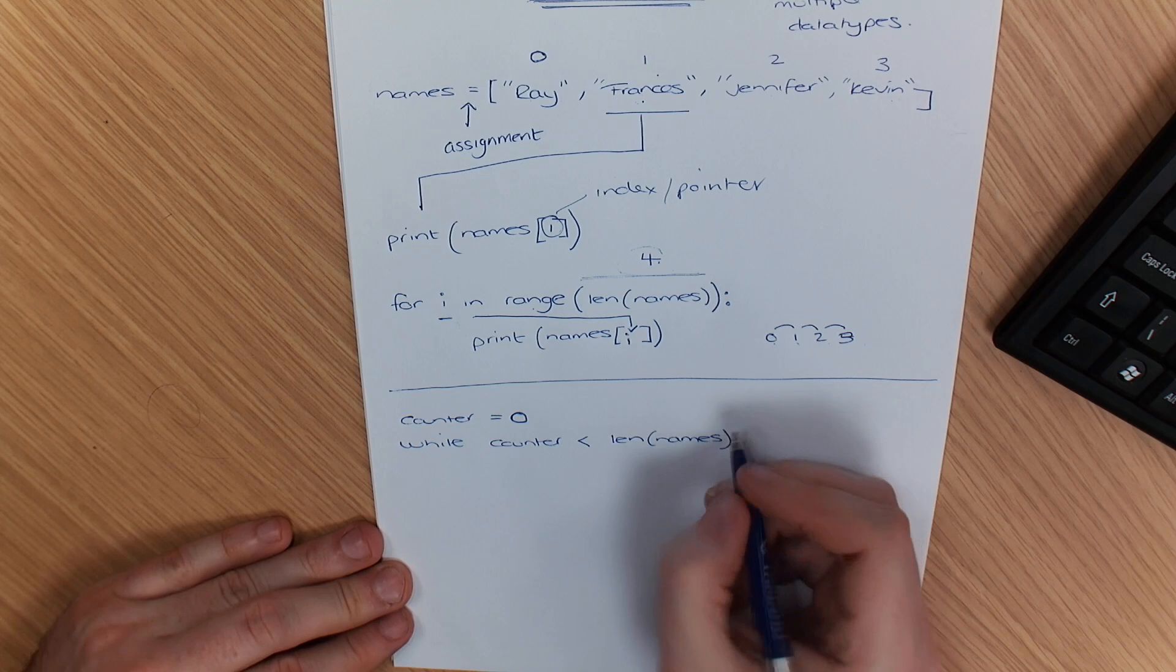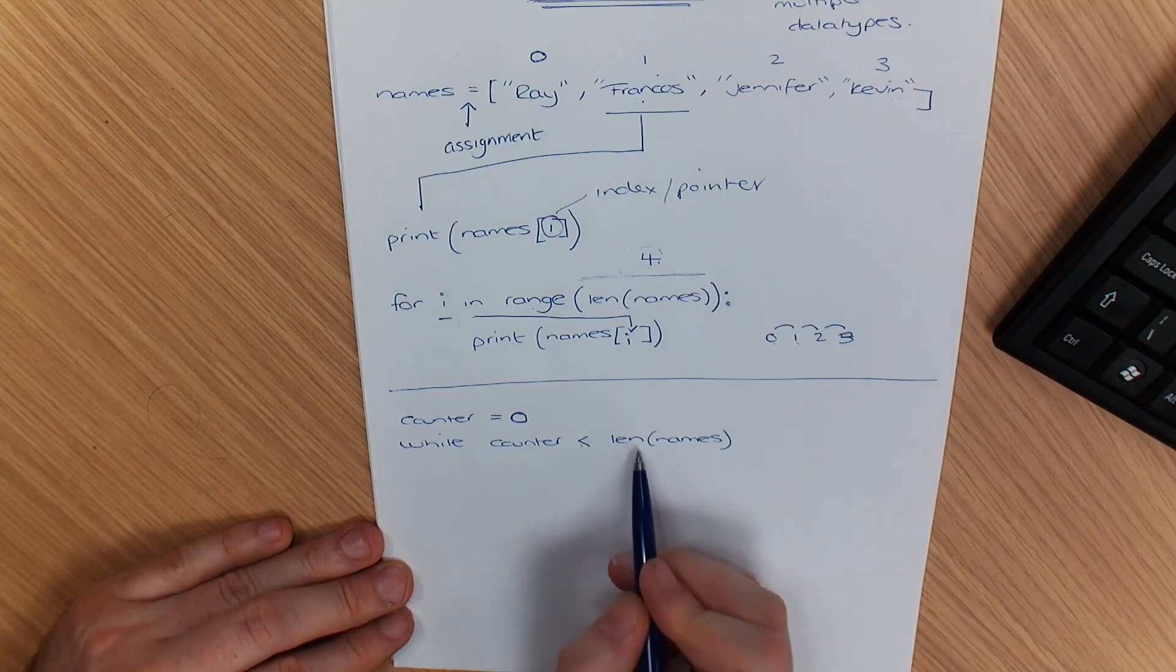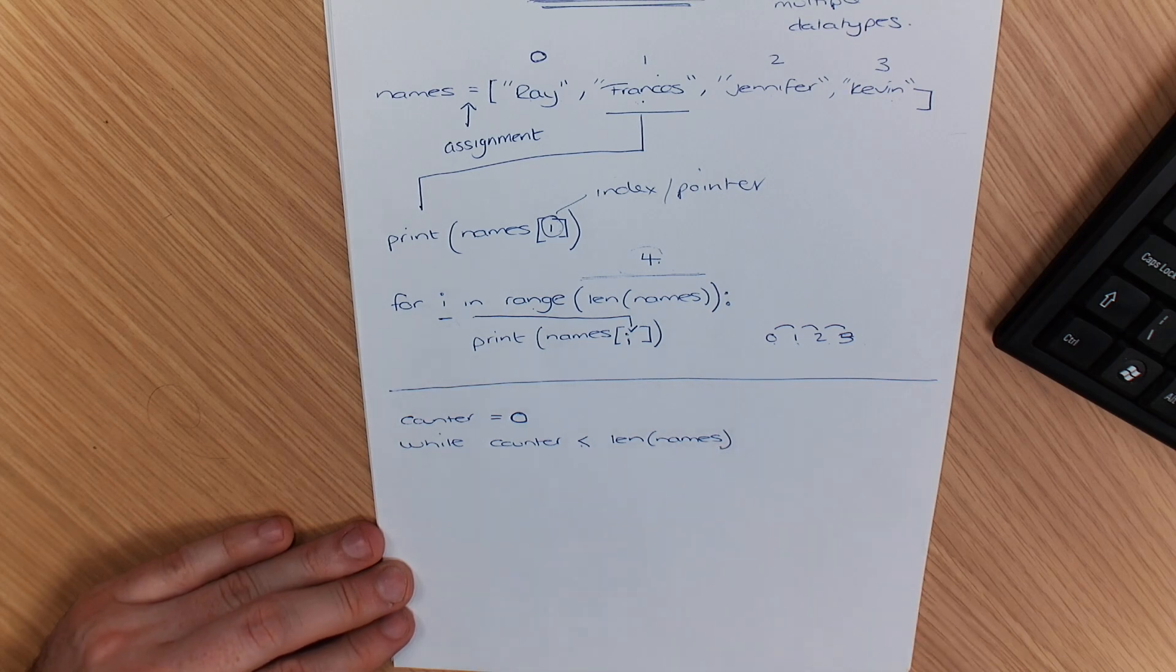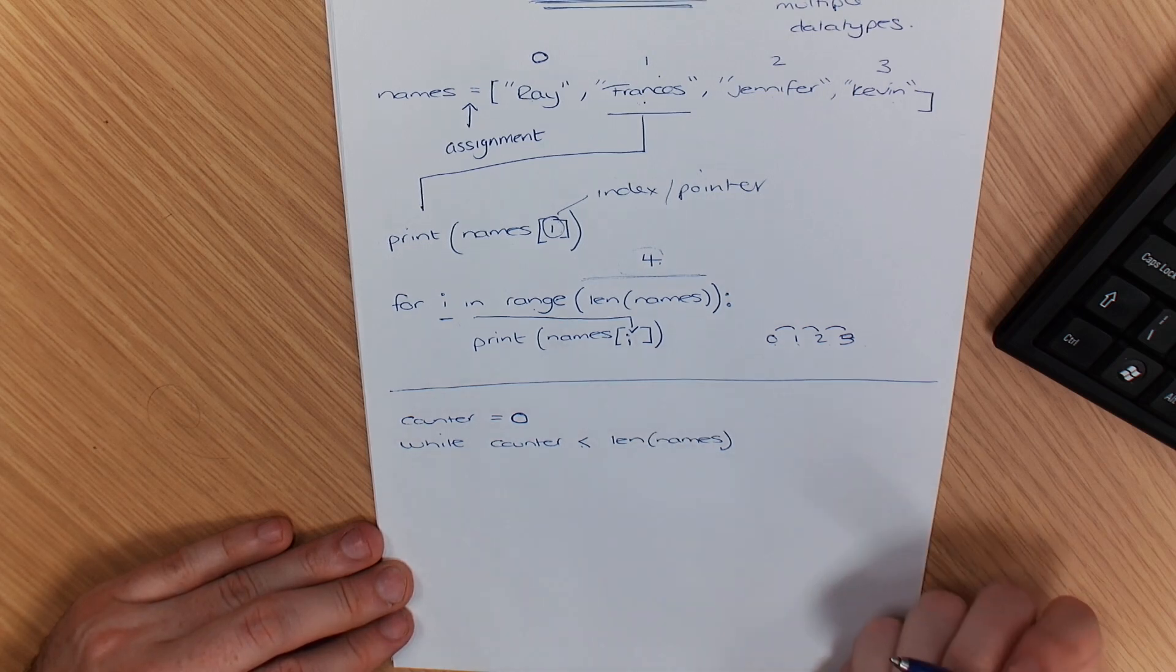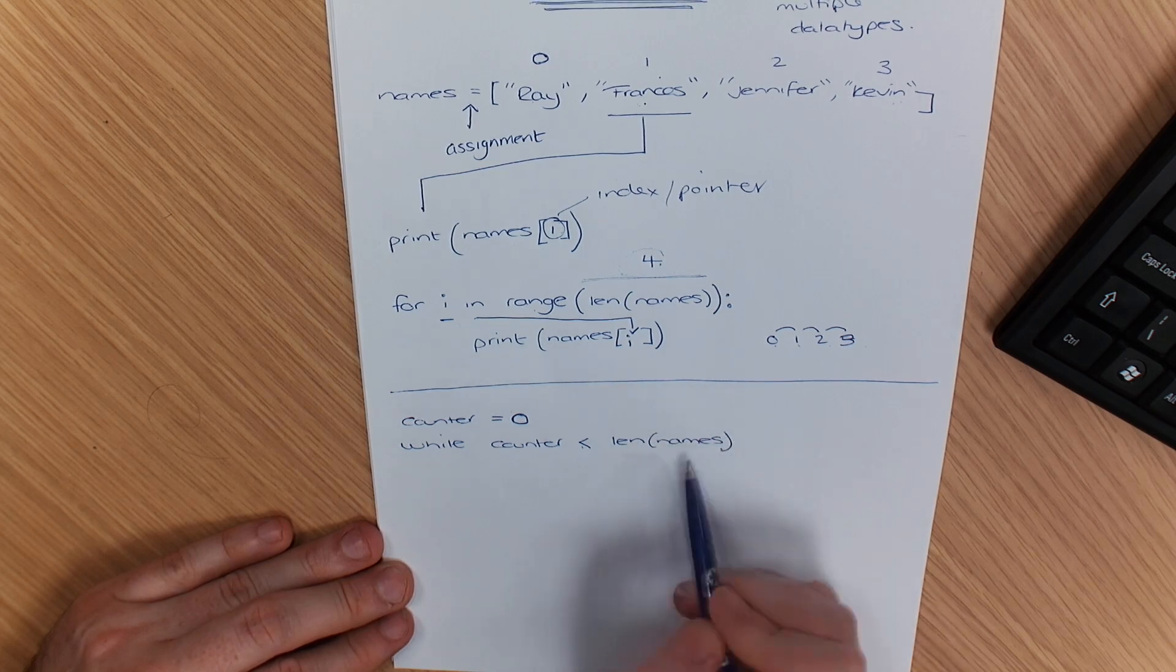So that's going to iterate while that is less than the length of names. So I'm not doing minus one on this. And the reason is because the length of it, what would the length of this be? Four. And I'm going to iterate starting at zero. So it's going to go zero, one, two, three. So I'm not putting anything else on the end of this. This is why I'm not putting less than or equal to.